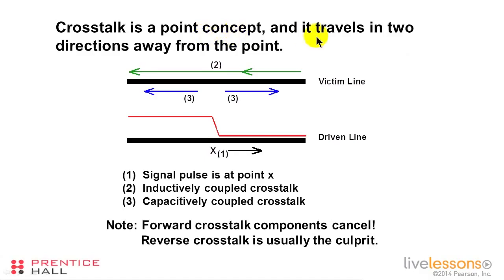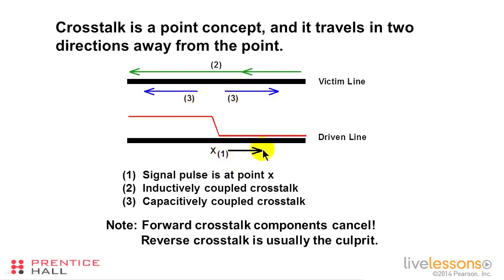Crosstalk is a point concept and it travels in two directions away from the point. Here is a signal propagating down a trace — we call this the driven or aggressor line. Here is an adjacent trace — the victim line. At a point on the aggressor trace, the signal changes from a logical zero to a logical one, causing capacitive coupling and inductive coupling on the victim trace. The capacitively coupled crosstalk radiates away in both the forward direction and the backward direction. The inductively induced crosstalk flows in the opposite direction from the signal causing it.